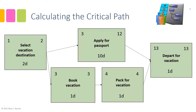To start the backward pass, the Late Finish is set equal to the Early Finish of the last activity. Logically, the latest the project may finish equals the earliest it can finish — we don't want to go past that. So the Late Finish of 'Depart for Vacation' is end of day 13. To calculate the Late Start, we take 13 minus the duration plus one: 13 minus 1 plus 1 equals 13.